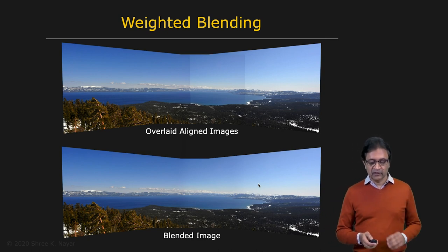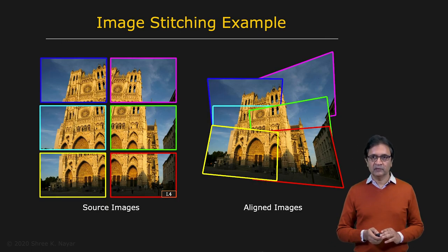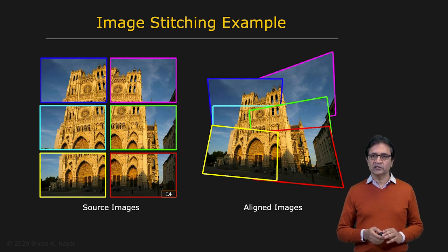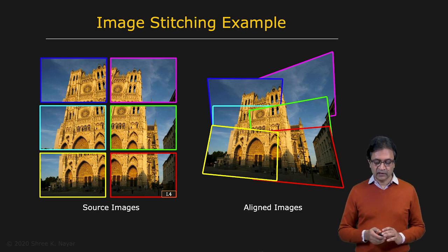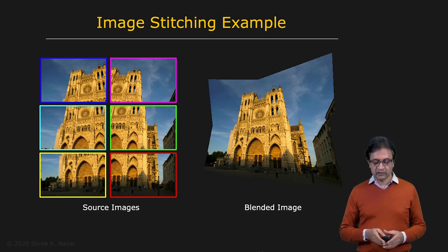We'll leave you with one last example — pictures taken of Notre Dame in Paris. After you compute all the homographies, you see the images warped and aligned. And then after you blend them, you get this final panoramic picture.